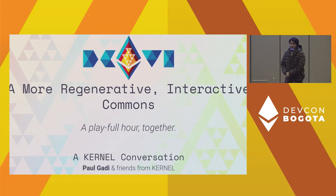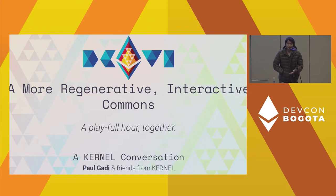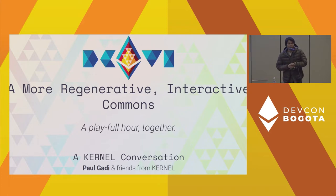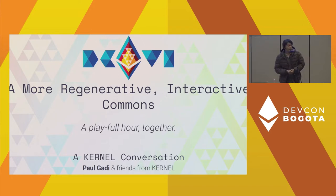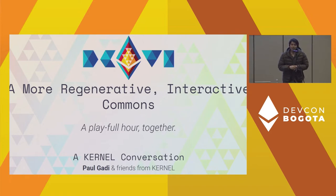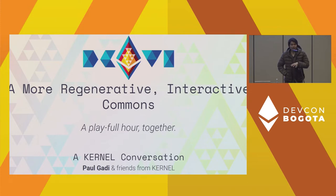A lot of Web2 has been largely influenced by the technology and not the arts, the sciences, or philosophy. So Kernel tries to get people to discuss what it is we really need to build. Today the hope is we get together and discuss what it means to build a more regenerative and interactive commons. We do this in Kernel through discussions and workshops like this one. The format is called a Junto, where groups discuss subjects relevant to crypto but quite deep.